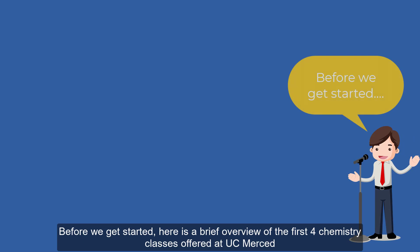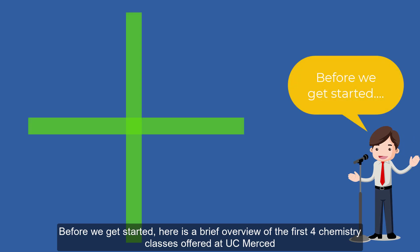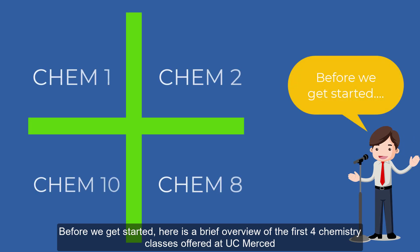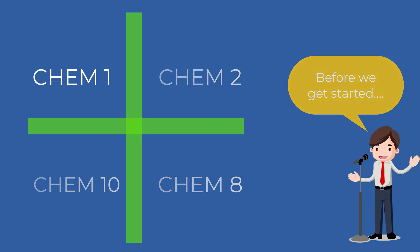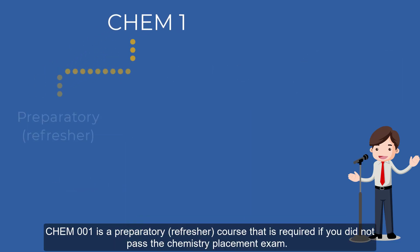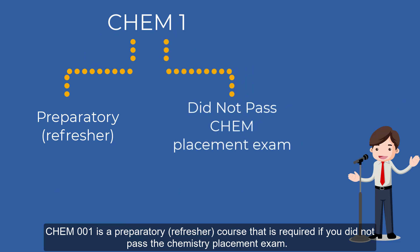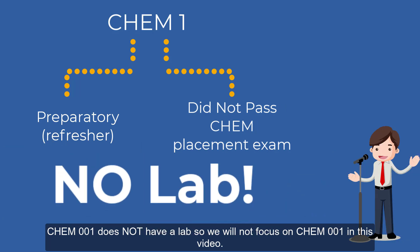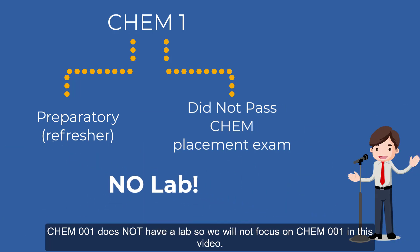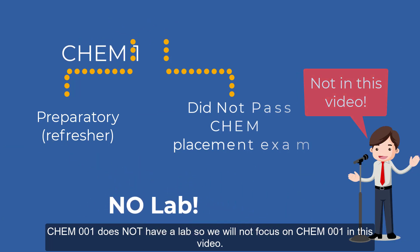Before we get started, here is a brief overview of the first four chemistry classes offered at UC Merced. Chem 1 is a preparatory refresher course that is required if you did not pass the chemistry placement exam. Chem 1 does not have a lab, so we will not focus on Chem 1 in this video.